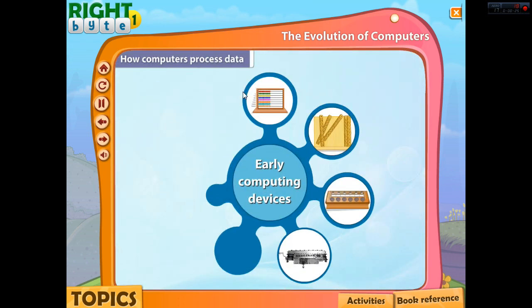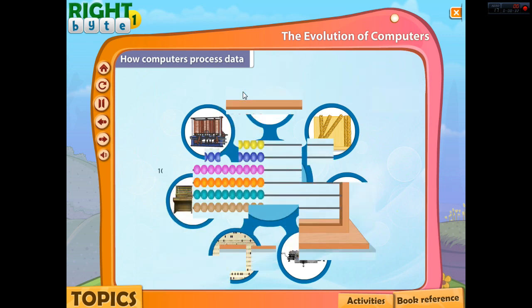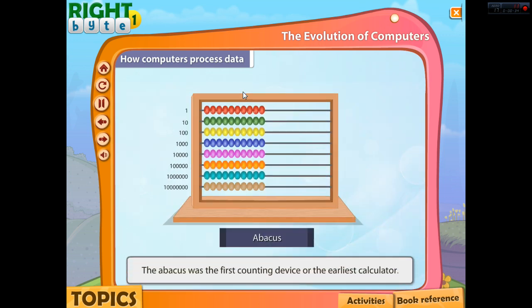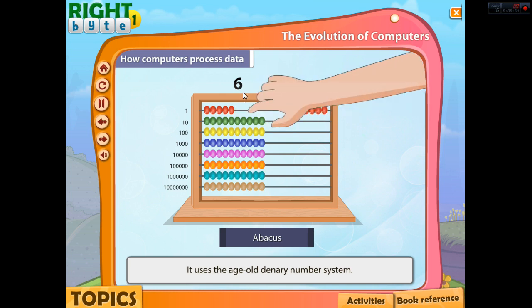Around 3,000 years ago, people used the abacus to calculate complex sums. The abacus was the first counting device or the earliest calculator. It was used to add and subtract numbers. It consists of a wooden frame with rods, each having beads. Counting on the abacus is done by sliding the beads across the rods. It uses the age-old denary number system.